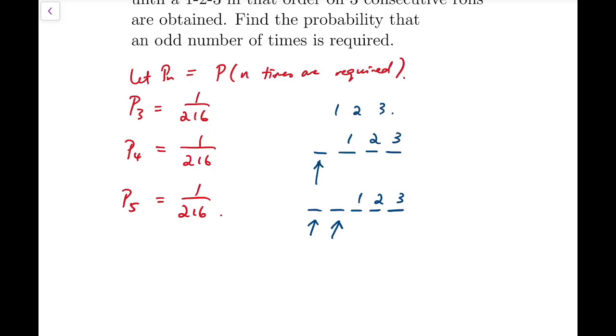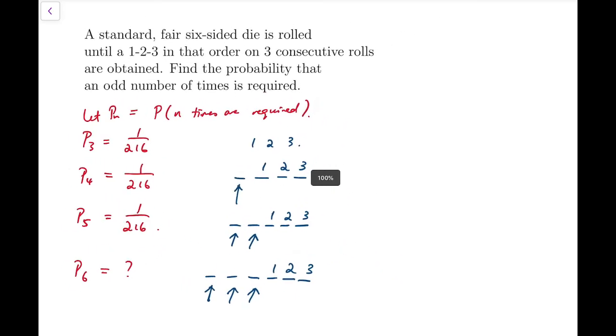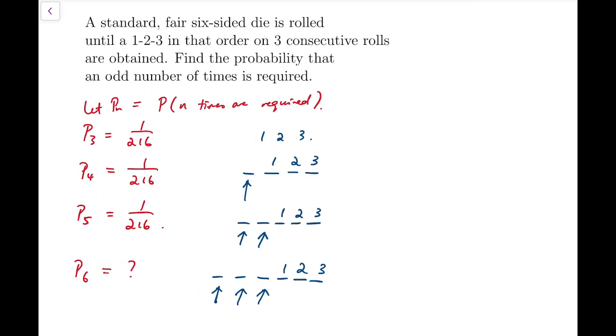However, when it comes to six rolls, things go a bit different. Even if we have fixed the last three rolls 1, 2, 3, there is still a possibility for us to achieve this earlier than the sixth roll, which is that we have exactly 1, 2, 3 at the first three rolls. So things start to get a bit out of control, but it's still manageable.